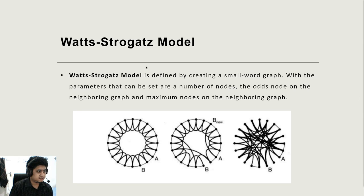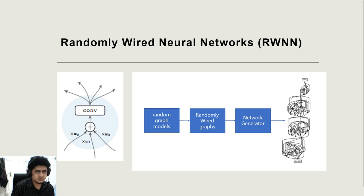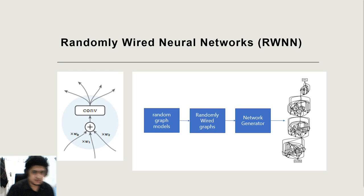This is a random graph that we use in this research. The Watts-Strogatz model is defined by creating a small world graph with parameters that can be set: a number of nodes, the odds of a node on the neighboring graph, and the maximum nodes on the neighboring graph. A randomly wired neural network, or RWNN, is a deep learning model that uses a random graph as its architecture. Each edge of the graph performs a data transfer from one node to another.